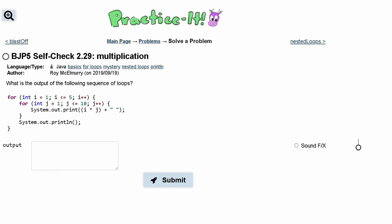For Practice-It check 2.29 multiplication, we are asked what is the output of the following sequence of loops? So we have a for loop encased in another for loop.